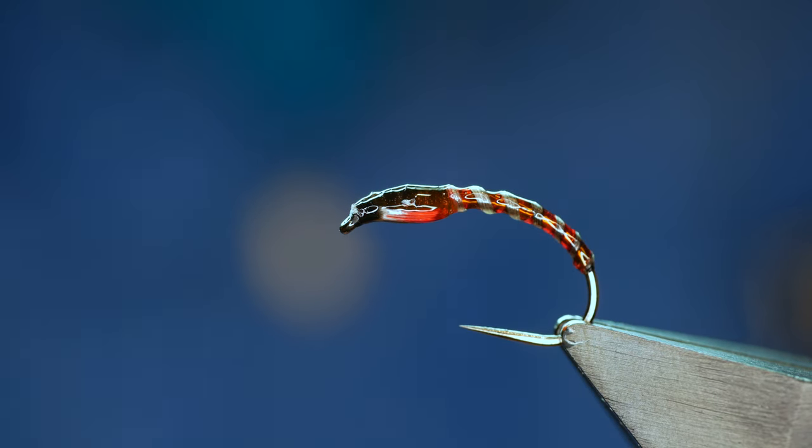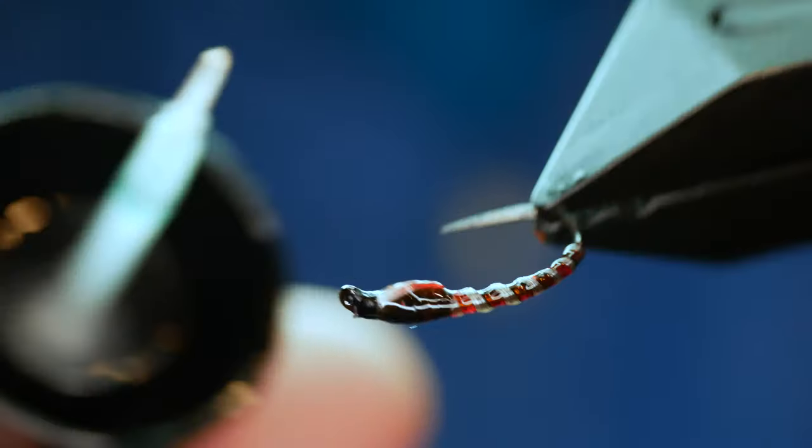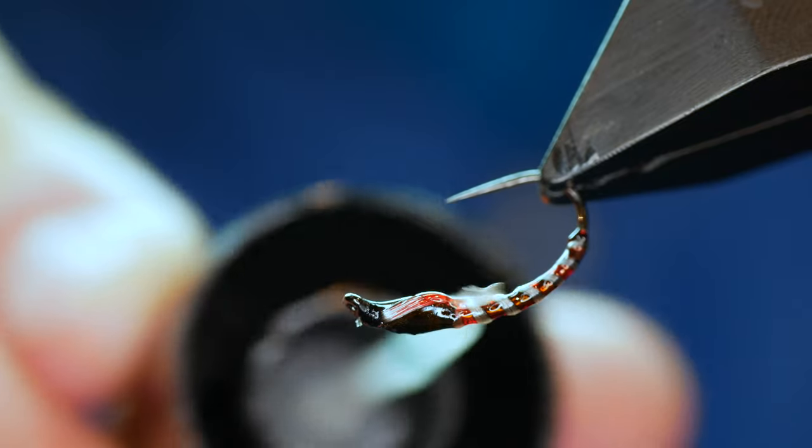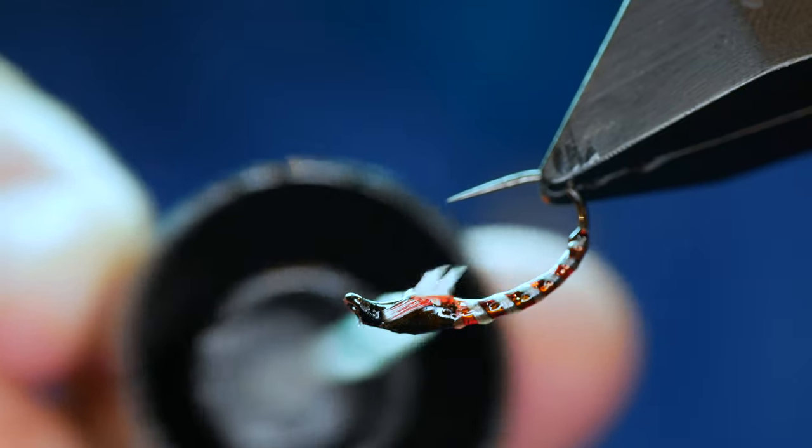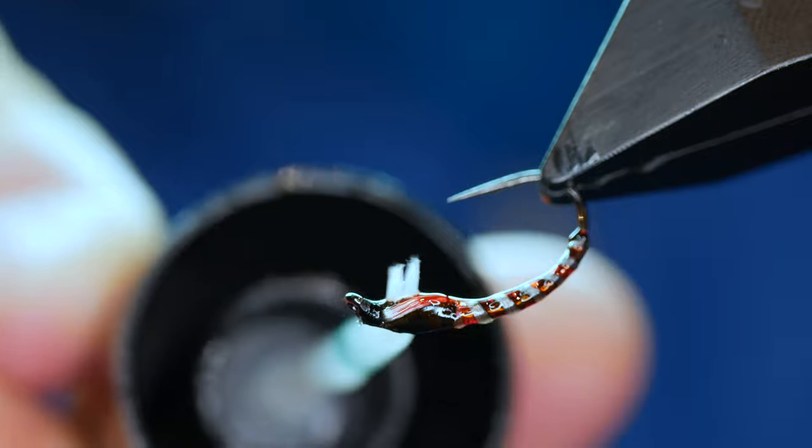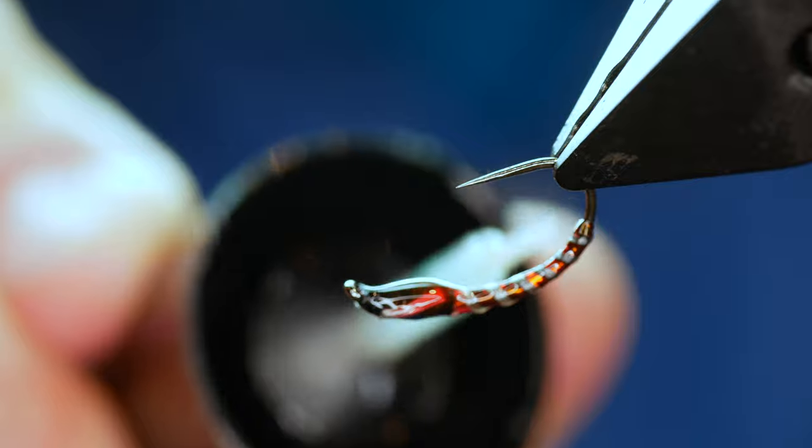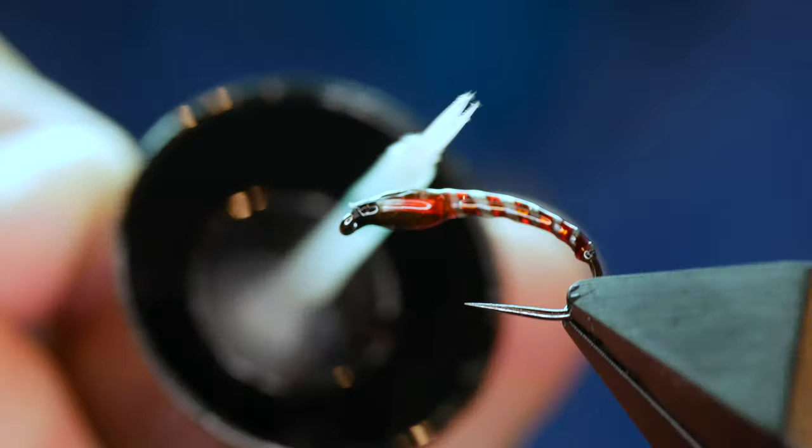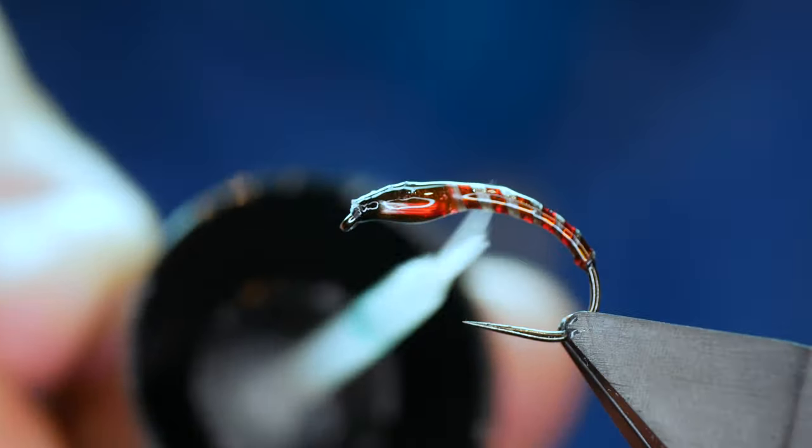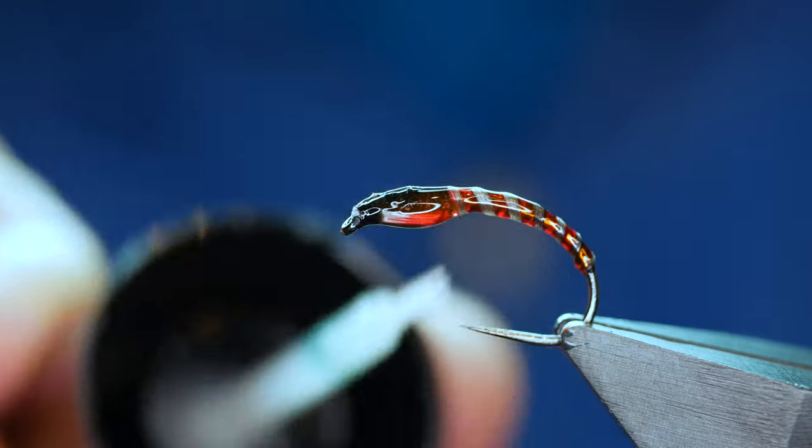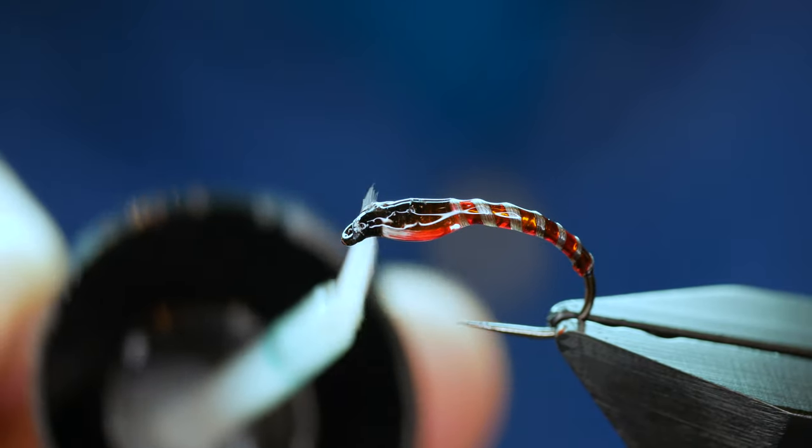Once I've got my first coat on then, what I want to do is start to get the shape that I'm after. And that's just a case of filling in just at the bottom here. I want to just make it a little bit thicker. Not much mind. I don't want the body getting any thicker. So I'm working the resin around the thorax area and just at the start of the body.